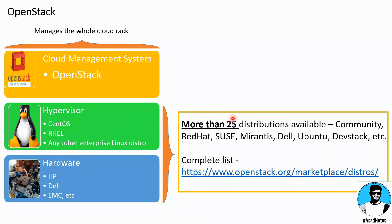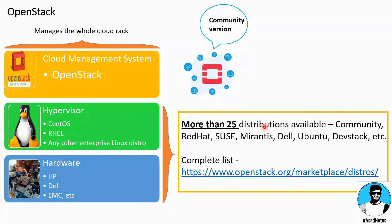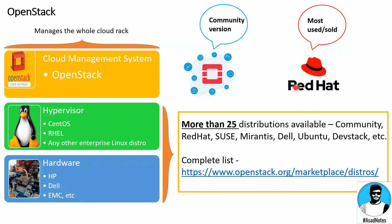At present there are more than 25 OpenStack distributions available. This is the community version, and the rest are all modifications of the community version only, which includes Red Hat, SUSE, Mirantis, Dell, Ubuntu, DevStack, and others. Out of them, the most used and most sold distribution is Red Hat OpenStack, which is very commonly available.